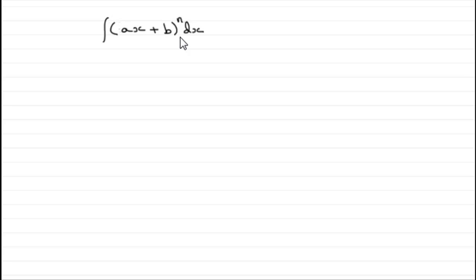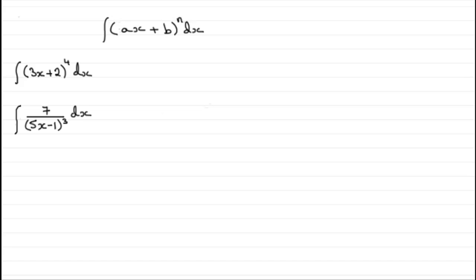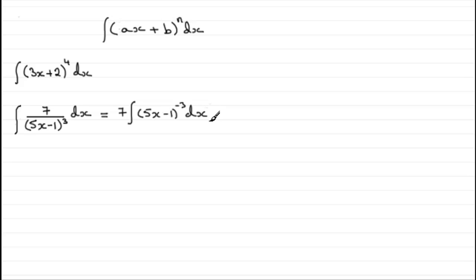What kind of functions are we talking about? The most obvious might be integrating something like 3x plus 2 to the power of 4 with respect to x. But it also covers functions like 7 over 5x minus 1 all cubed. Because we can think of this as 7 times the integral of 1 over 5x minus 1 all cubed. And when you've got 1 over 5x minus 1 all cubed, you can bring it up and write it as 5x minus 1 to the power of minus 3, and integrate that with respect to x.